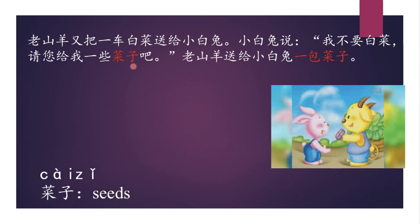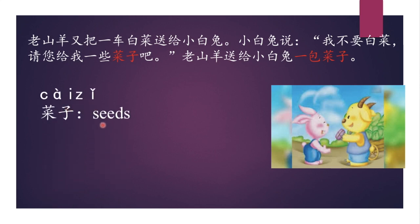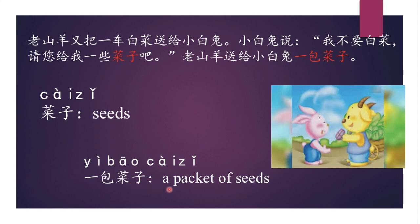請你給我一些菜籽吧。 菜籽 means seeds. 一些 means some. Please give me some seeds. 老山羊送給小白兔一包菜籽。 包 means packet, so 一包菜籽 is a packet of seeds. The old goat gave the white rabbit a packet of seeds.